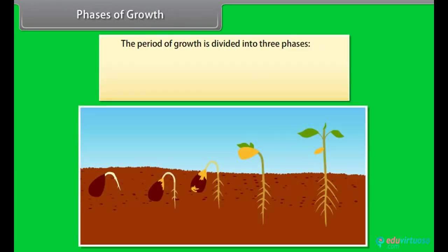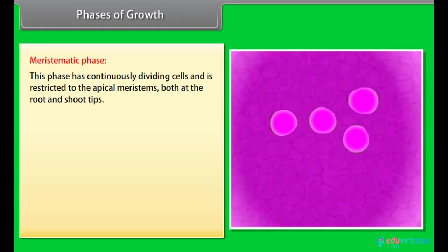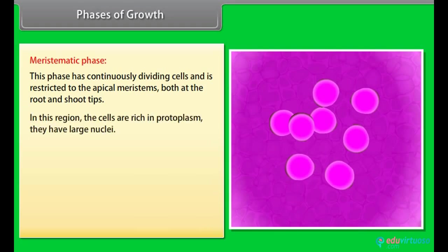Phases of growth. The period of growth is divided into three phases: meristematic, elongation and maturation. Meristematic phase. This phase has continuously dividing cells and is restricted to the apical meristems, both at the root and shoot tips. In this region, the cells are rich in protoplasm. They have large nuclei.